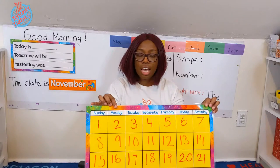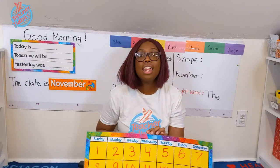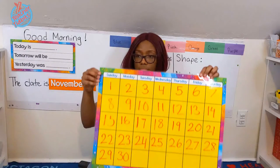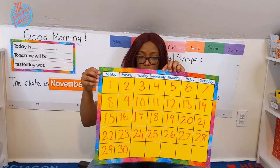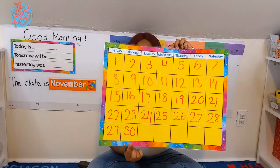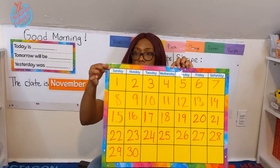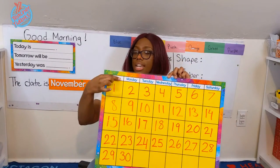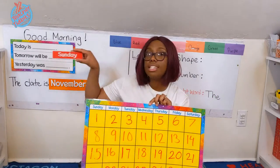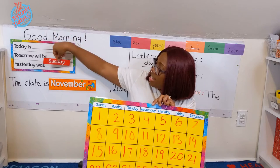Let's put down our calendar graph right in front of me here and let's figure out the day of the week. Well, here's our calendar, and here's the day we're on. Yesterday was this day — Sunday. So let's put that on our board. Yesterday was Sunday.